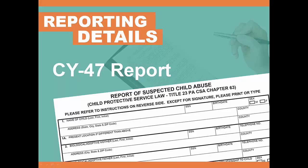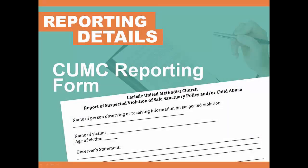In either case, as a reporter, you do not have to complete all the information on the forms — just what you know. If an investigation occurs, Children and Youth Services will secure the additional information. CUMC also has a report form that is required to be completed by anyone who contacts Childline. This form is available online and in the binders as well. It is a much shorter form with fewer details. This report goes to the pastors. Once a report is made, the pastors are required to make our conference office aware of the situation reported.